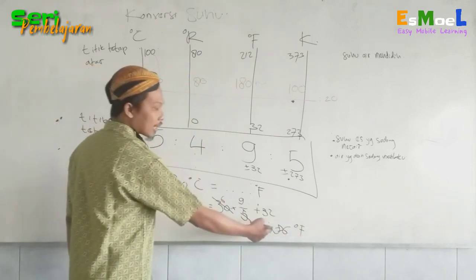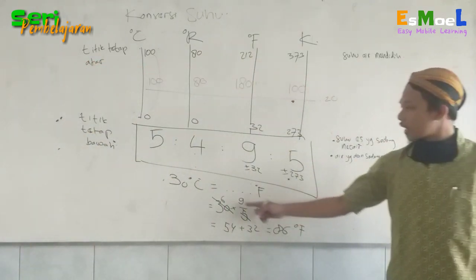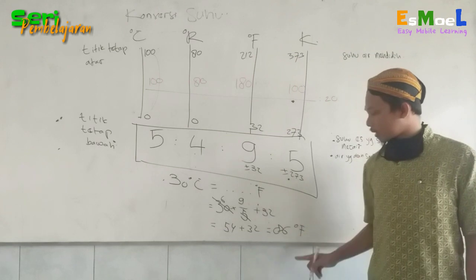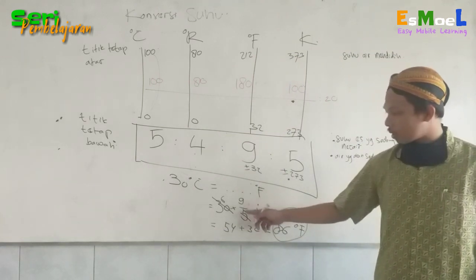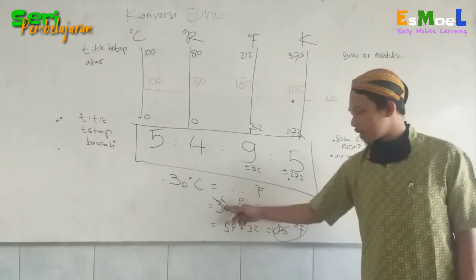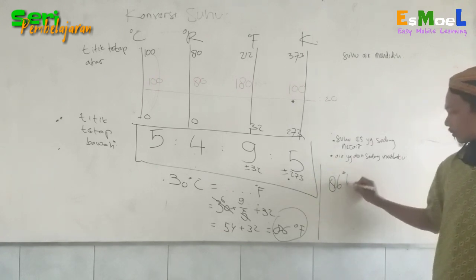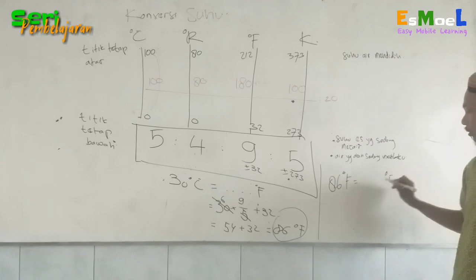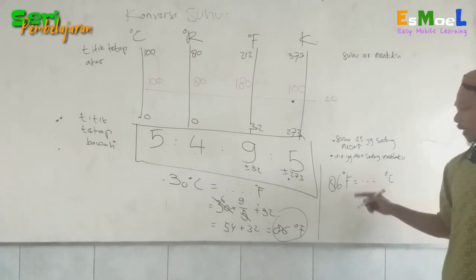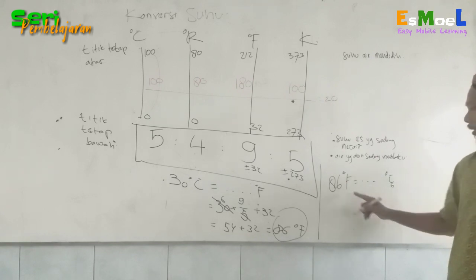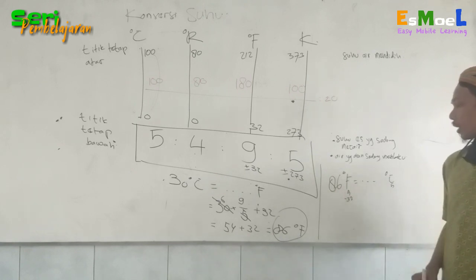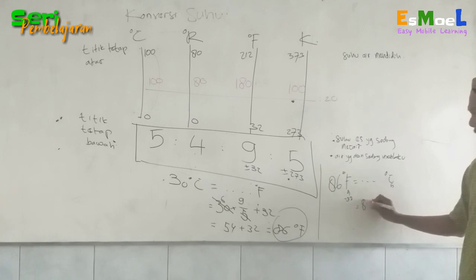Nanti satu contoh soal lagi yang saya balik. Tadi 30 derajat Celsius sama dengan 86 Fahrenheit, ketemu 86. Karena ingat yang dicari taruh atas dulu perbandingannya. Yang bawah itu yang diketahui. Saya balik di sini. Jika 86 derajat Fahrenheit dikonversikan ke Celsius. Di sini ingat perbandingannya. Celsius berapa? 5. Di sini 9. Berarti kalau dari Fahrenheit, min 32. Berarti 86 dikurangin 32. Terus dikalikan 5 per 9.